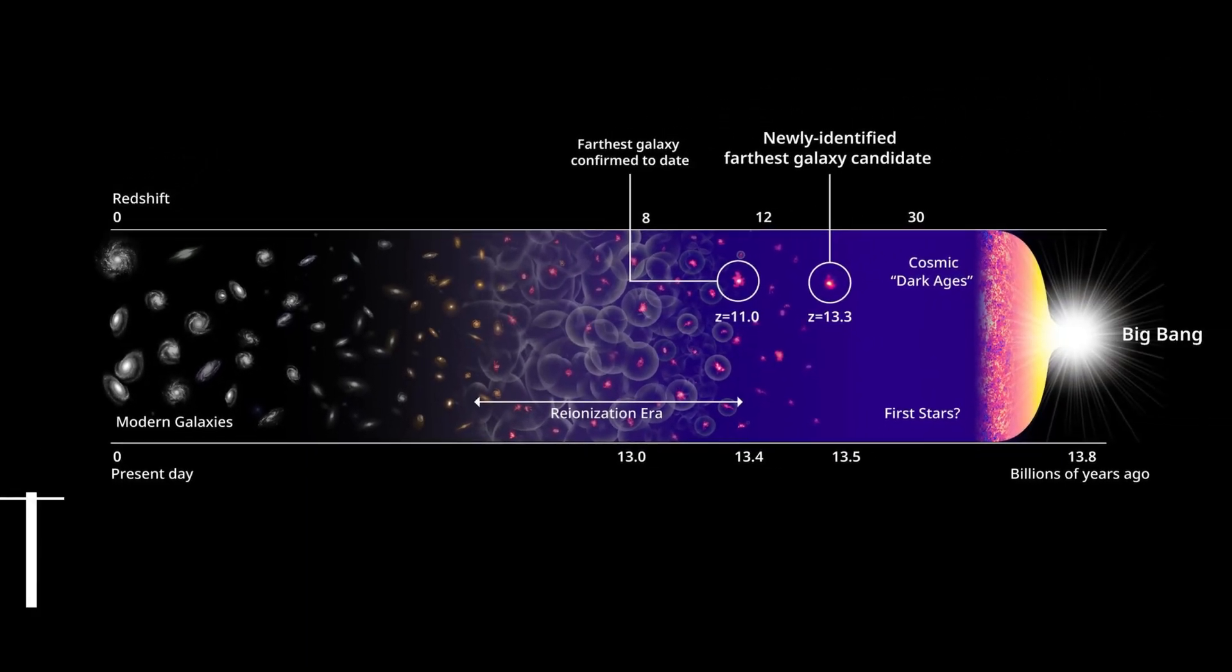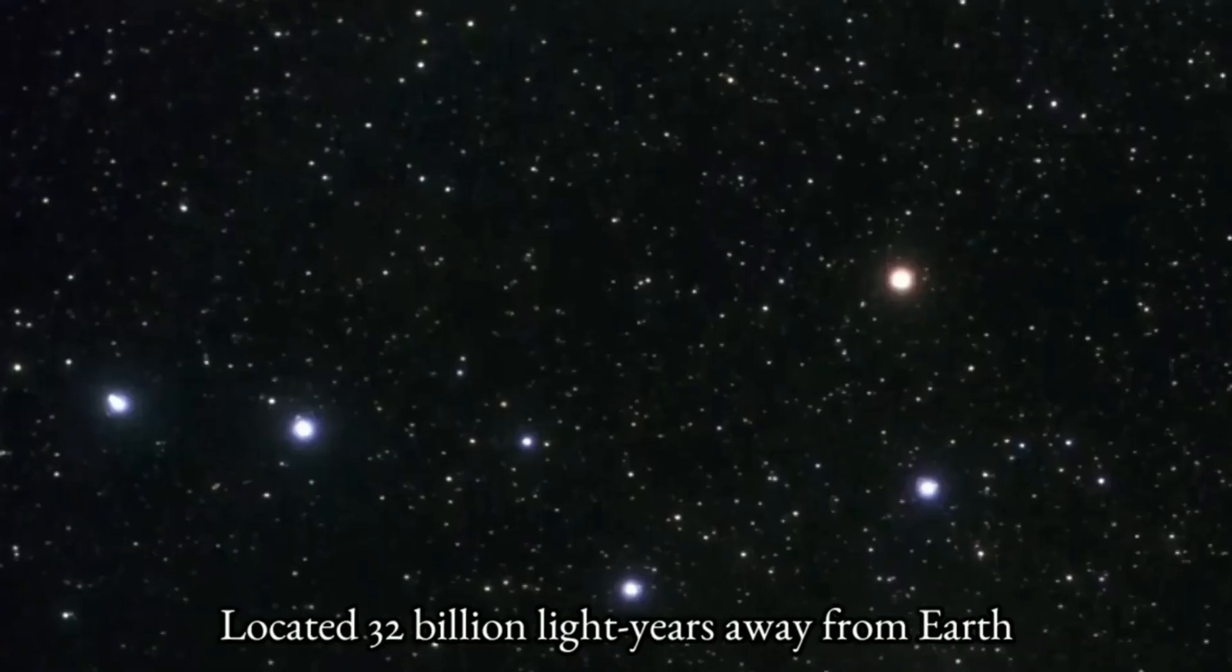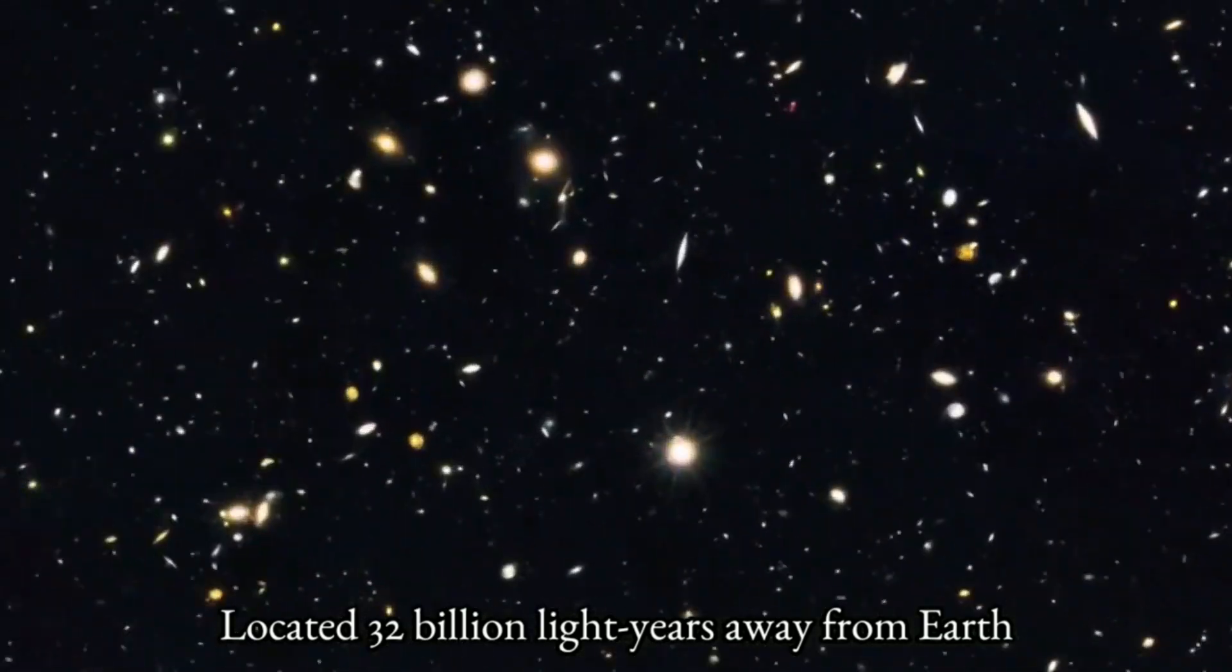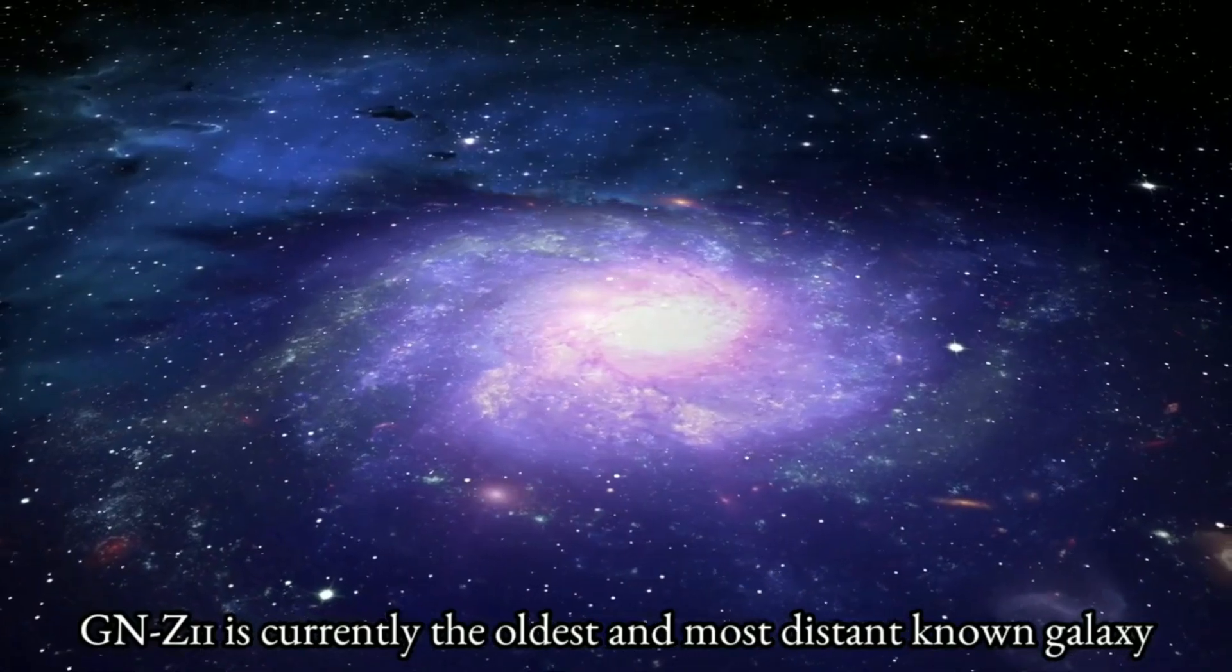In 2015, the Hubble Space Telescope made the discovery of a galaxy that was later given the designation GNZ11. The Hubble Space Telescope, on the other hand, is unable to observe galaxies with redshifts greater than 12.